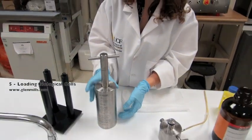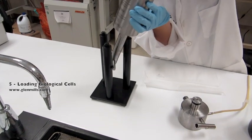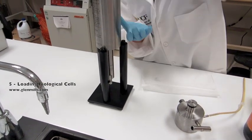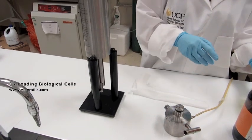Flip the unit over and place these two parts on the stand between the three posts. Fill the cell suspension until about one inch from the top.